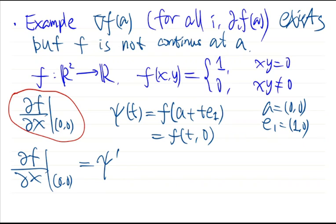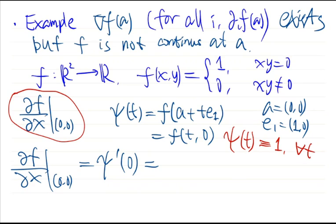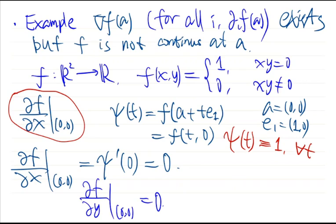The partial derivative at the origin is the derivative of p_c at 0. Since f(t, 0) = 1 for any t — because when y = 0, one coordinate is zero and f equals 1 — p_c(t) is a constant function equal to 1. So its derivative is 0. Similarly, the partial derivative with respect to y is also 0. Both derivatives exist, but f is not continuous at the origin.